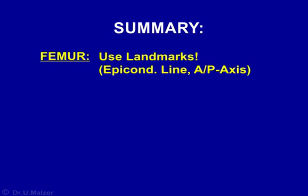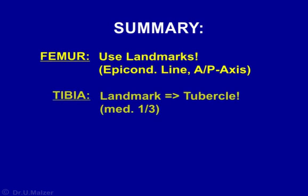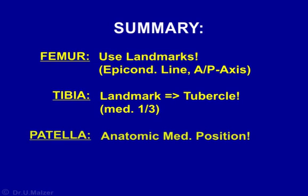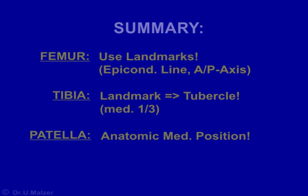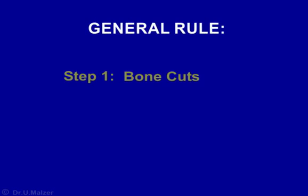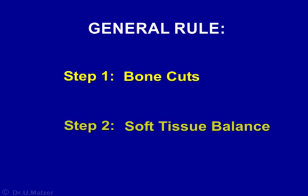The main alignment criteria are as follows: always start the procedure with correctly placed bone cuts. Only after the bone cuts have been made should the ligaments be checked for imbalance and any necessary soft tissue surgery performed.